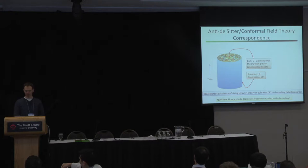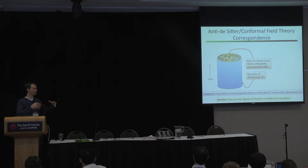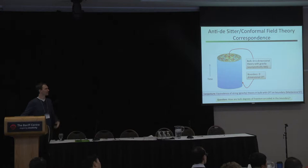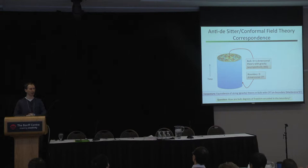So it's a spacetime in a box, and it has a boundary. You're allowed in this theory to put matter deep inside — we call it the bulk, the interior. You can put black holes, solar systems, galaxies — whatever you like deep inside — but it should calm down and become empty as you get out towards the boundary, where it recovers the anti-de Sitter geometry.